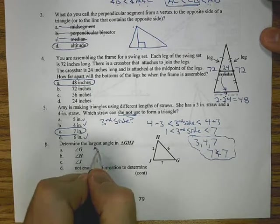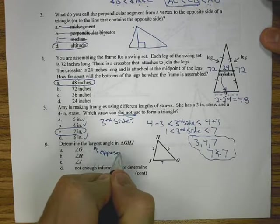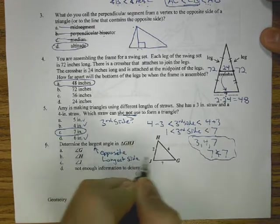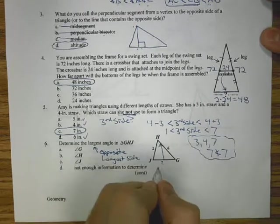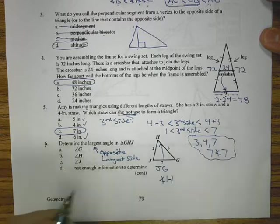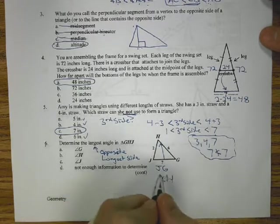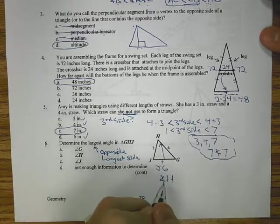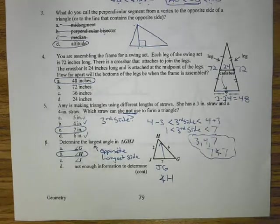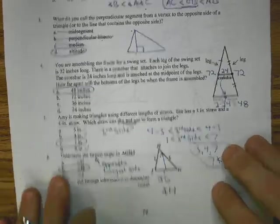Number 6, determine the largest angle in GHJ. The largest angle is opposite the longest side. Longest side is JG, so the angle opposite that is angle H.